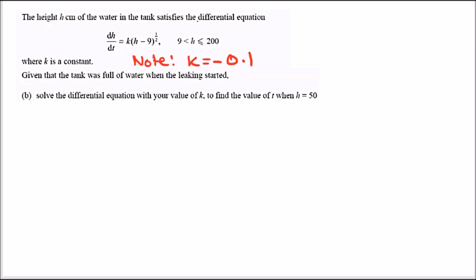Part B: given that the tank was full of water when the leaking started, and our differential equation is given with k equals minus 0.1 and h as the height, solve the differential equation with k equals minus 0.1 to find the value of t when h is 50.